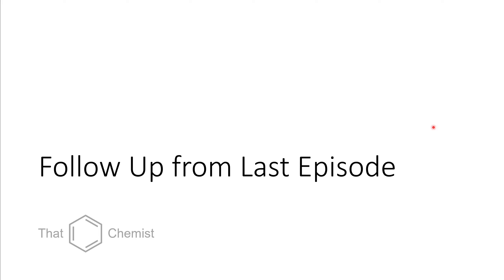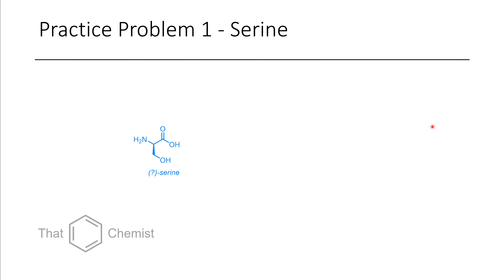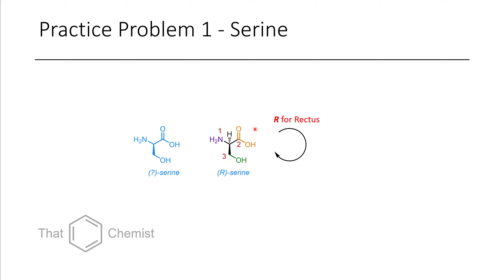To follow up from last episode, we had a couple practice problems. The first problem is serine, and our goal is to determine whether it's the R or the S isomer. The way we do that is we stick the hydrogen in the back and then count using priorities. First we choose the nitrogen, because nitrogen is a larger element than carbon. Next we have our choice between two carbons — because the carboxylic acid has two oxygens and the alcohol only has one oxygen, priority goes to the carboxylic acid. And because the priorities go one, two, three clockwise, we get a rectus isomer.